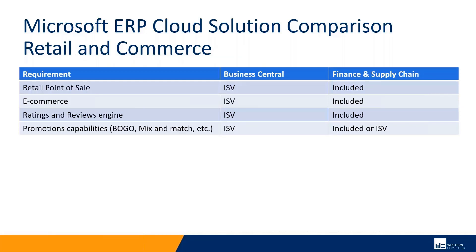Retail and commerce is really driven by your size. Some of the largest retailers and consumer brands use the Finance and Supply Chain commerce product, but many small to mid-size retailers use Business Central with its retail ISVs. That's included out of the box in Finance and Supply Chain, but Business Central has great ISVs. One thing we also run into is distribution companies that need advanced promotional pricing capabilities — we'll often use the retail module functionality in wholesale sales orders to give customers more flexibility in pricing, so there are some advantages to Finance and Supply Chain there.